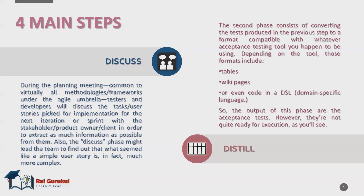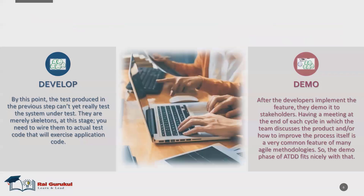The output of this phase is the acceptance tests; however, they are not quite ready for execution yet. Next is the develop phase, where they start implementing the process with best practices and exercise the application code. After the developer implements the features, they demo it to the stakeholders. Having a meeting at the end of each cycle to discuss the product or how to improve the process is a common feature of many agile methodologies, and the demo phase of ATDD fits nicely with that.